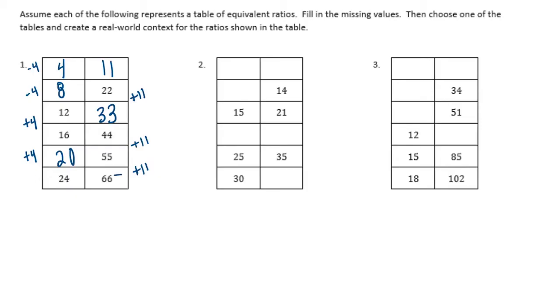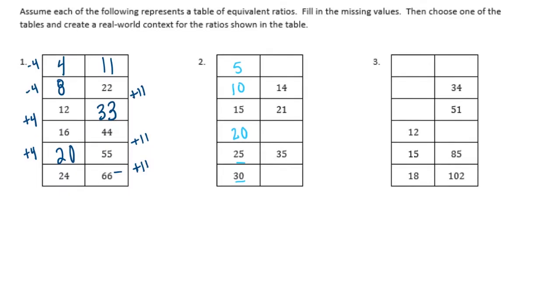On 2, we have 25 and 30 here. So that's a difference of 5, so this is probably 20, 10, 5. And then, let's see, 14 and 21, and that's a difference of 7.